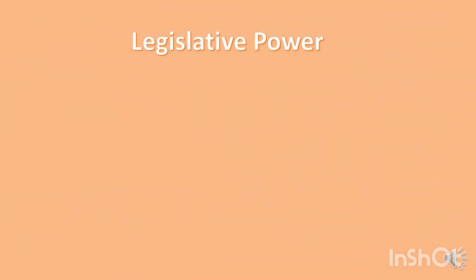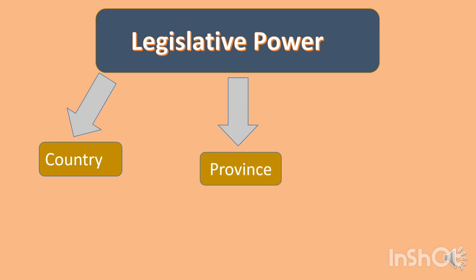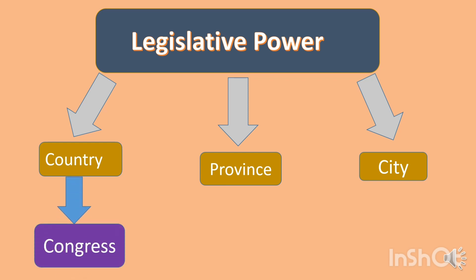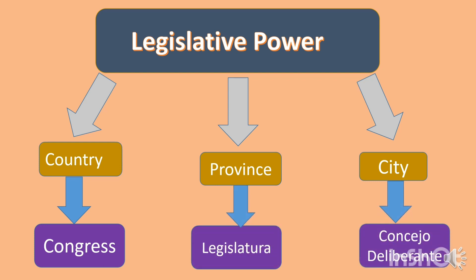Let's talk about the legislative power in Argentina. At the national level we have the Congress; in the province, the legislatura; and in the city — in the city of Salta — we have the Consejo Deliberante. This is the legislative power in Argentina and in our province.